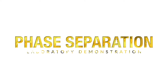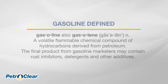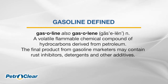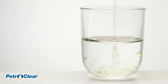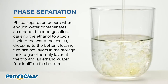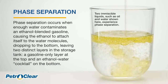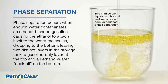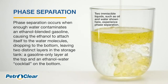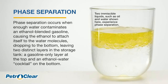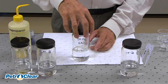The following is a laboratory demonstration of the difference between water in gasoline and water in an ethanol blended gasoline. We will also demonstrate how phase separation takes place. Phase separation occurs when enough water contaminates an ethanol blended gasoline, causing the ethanol to attach itself to the water molecules, dropping to the bottom and leaving two distinct layers in the storage tank: a gasoline only layer at the top and an ethanol water cocktail on the bottom.